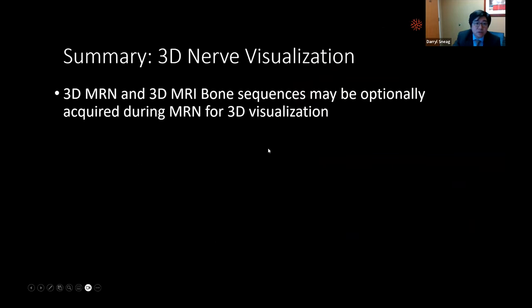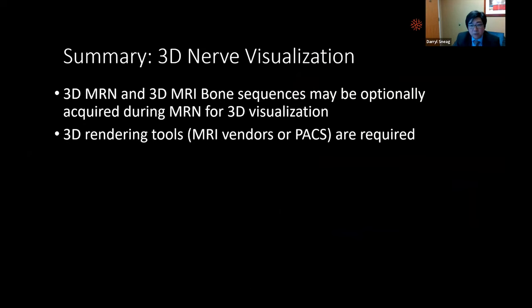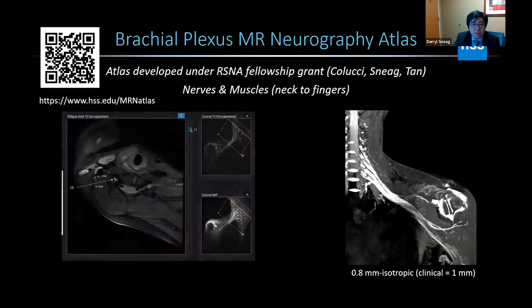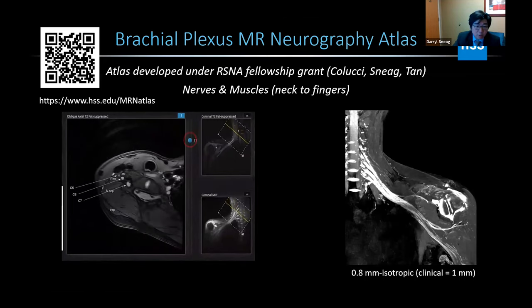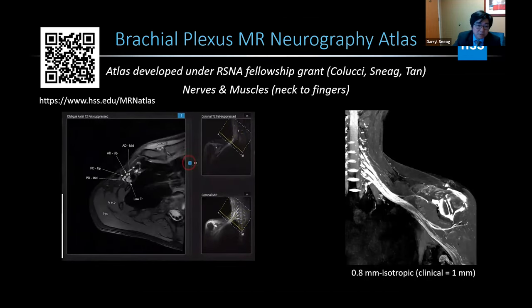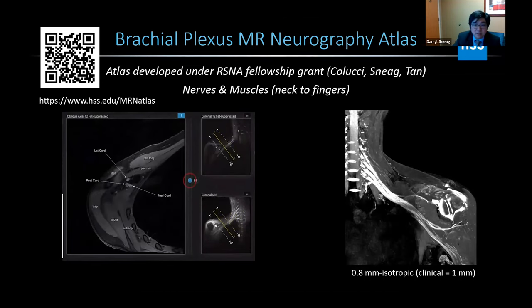In summary for 3D nerve visualization: 3D MRN and bone sequences can optionally be acquired during the MRN exam. 3D rendering tools from MR vendors on PACS systems are useful for preoperative visualization, patient education, and medical education. Additionally, Dr. Phil Kolocci has developed a brachial plexus MR neurography atlas with MRN images acquired in sections orthogonal to the nerve and longitudinally, with annotated nerves and muscles.